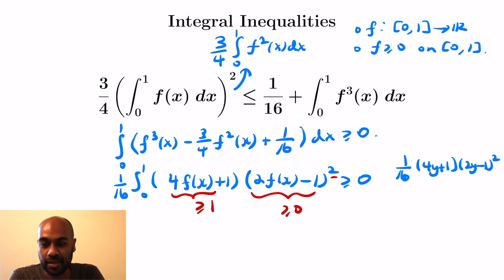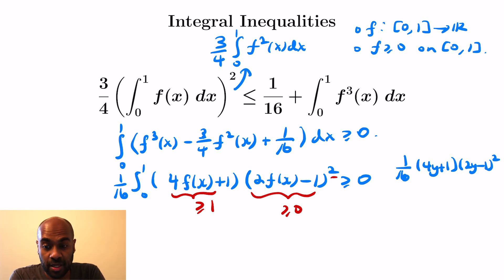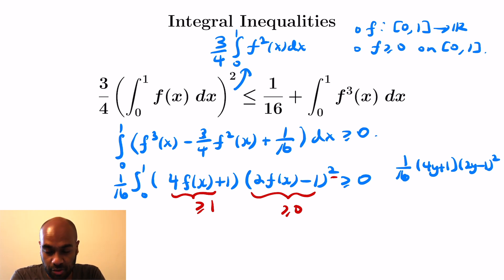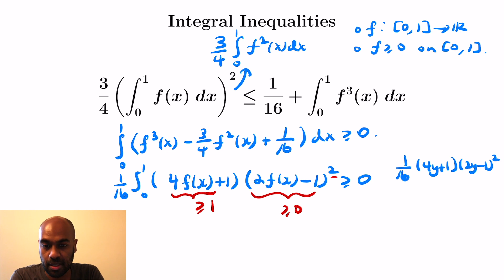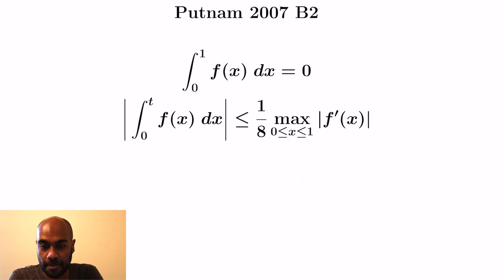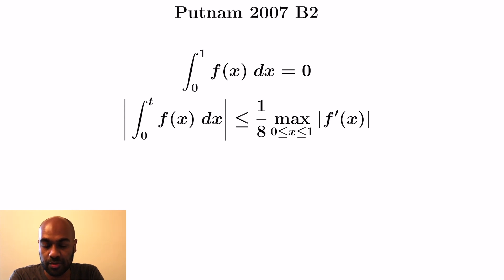The moral here was: if we have a square of an integral, we can use Cauchy-Schwarz, then write everything in terms of one integral, and then try to prove that the integrand is itself a non-negative function. This type of technique is really great. The next problem is Putnam 2007 number B2.